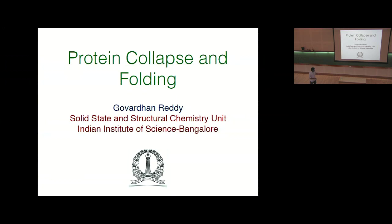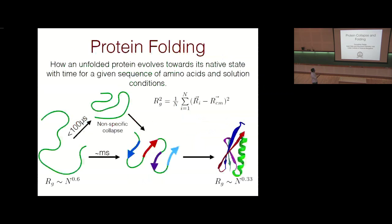Thank you to the organizers for this opportunity. This talk is about addressing a controversy between SAXS and FRET experiments in studying protein collapse. Proteins are generally heteropolymers synthesized from amino acids, and at physiological conditions they are generally in the folded state.